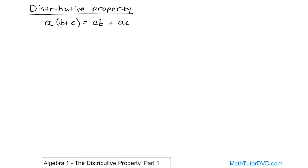I told you that in the last section — we did a couple of problems with a negative sign out in front, and I told you that negative gets applied to everything inside because the negative is sitting outside the parenthesis, which groups everything together. So whatever's out here, in this case a, it's applying itself to everything, the entire unit. So it has to go in and apply itself like that. That's what's called the distributive property.